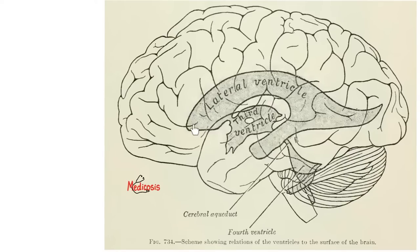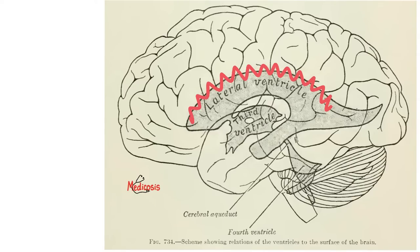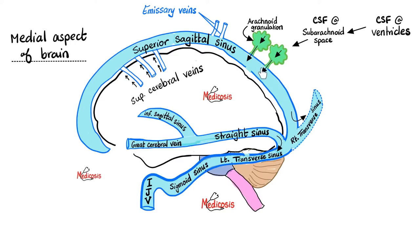This is the lateral ventricle. It has an anterior horn, a body, a posterior horn, and an inferior horn. Between the lateral ventricle and the third ventricle is the interventricular foramen of Monroe. The third ventricle continues as the cerebral aqueduct of Silvius, then the fourth ventricle. If you continue downstairs, this is the central canal of the spinal cord, or you can leave and go to the subarachnoid space. The ependymal cells lining the choroid plexus make the CSF; arachnoid granulations drain the CSF from the subarachnoid space into the dural venous sinuses such as the superior sagittal sinus.